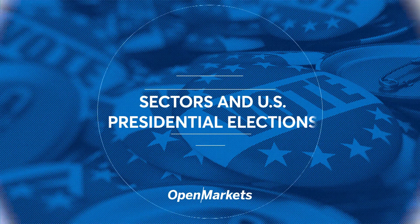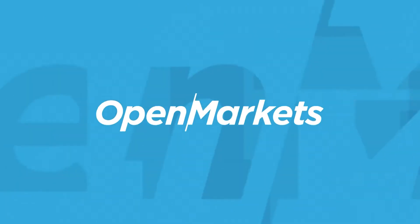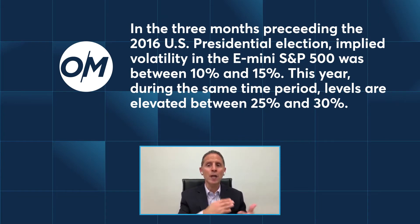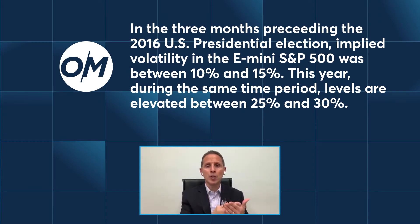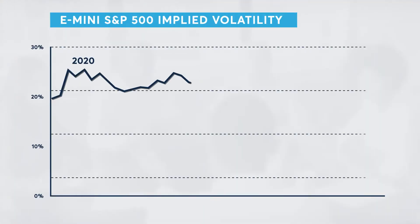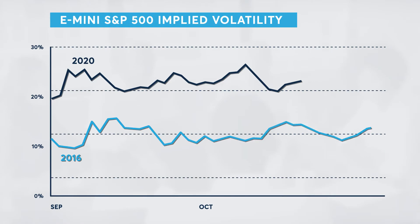In 2016, three months preceding the presidential election, implied volatilities of the S&P as measured by the VIX ranged between 10 and 15. In this same period in 2020, volatilities are elevated, usually between 25 and 30. Eric Nordland, is there a takeaway from implied volatility being elevated going into the election?